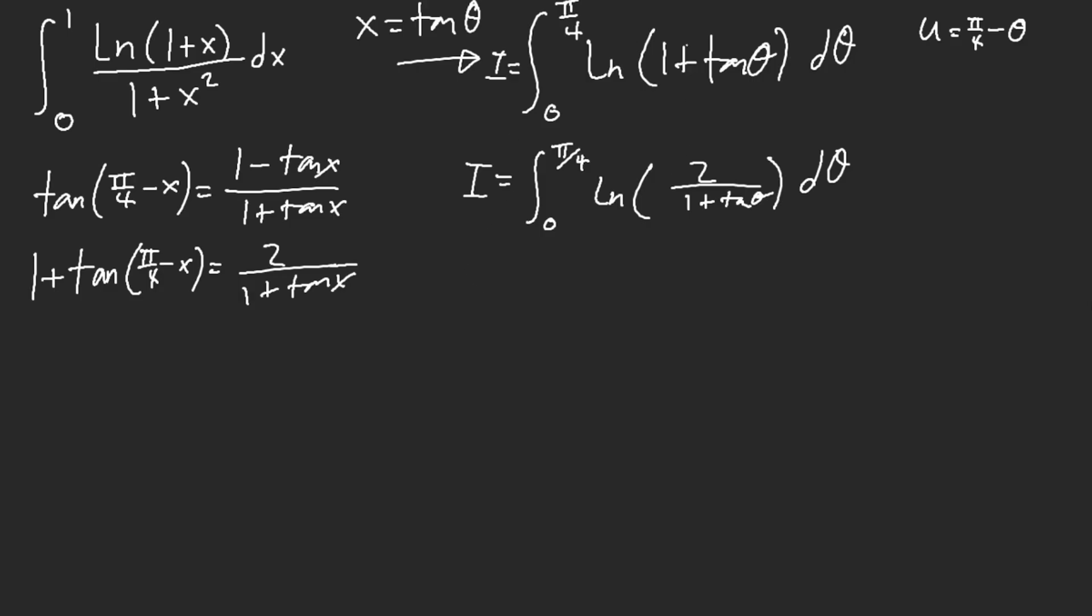Let's add these two integrals together. 2i is equal to 0 to pi over 4. We get this plus this, that 1 plus tangent theta cancels out, so we end up with ln of 2, d theta.